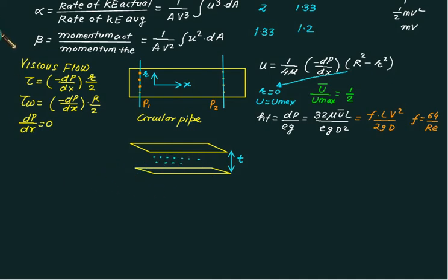Y is the distance measured from the lower plate. If we put y equal to zero, then we are on the fixed plate and we have maximum shear stress, tau wall. So tau wall equals minus dp/dx × t/2.